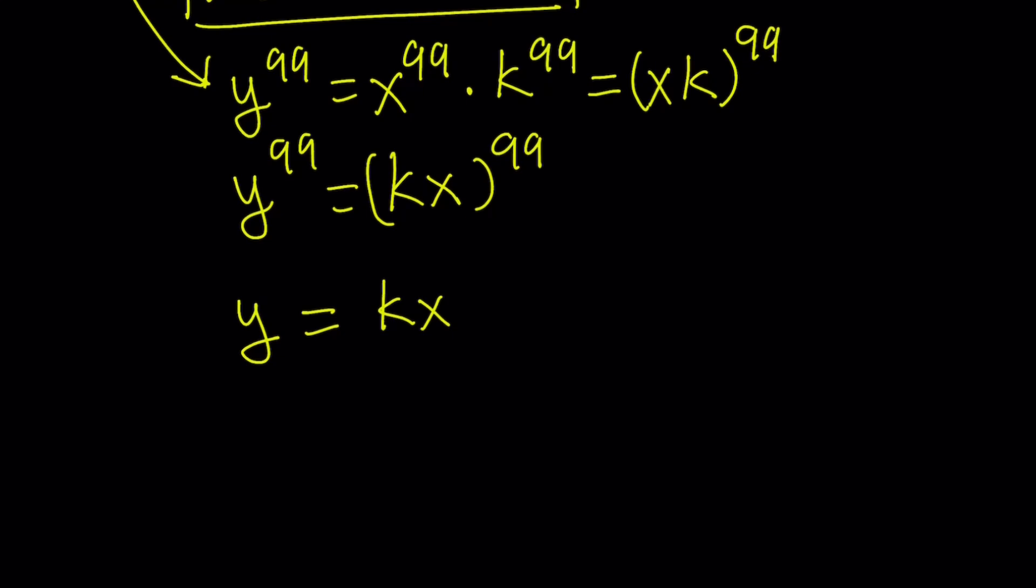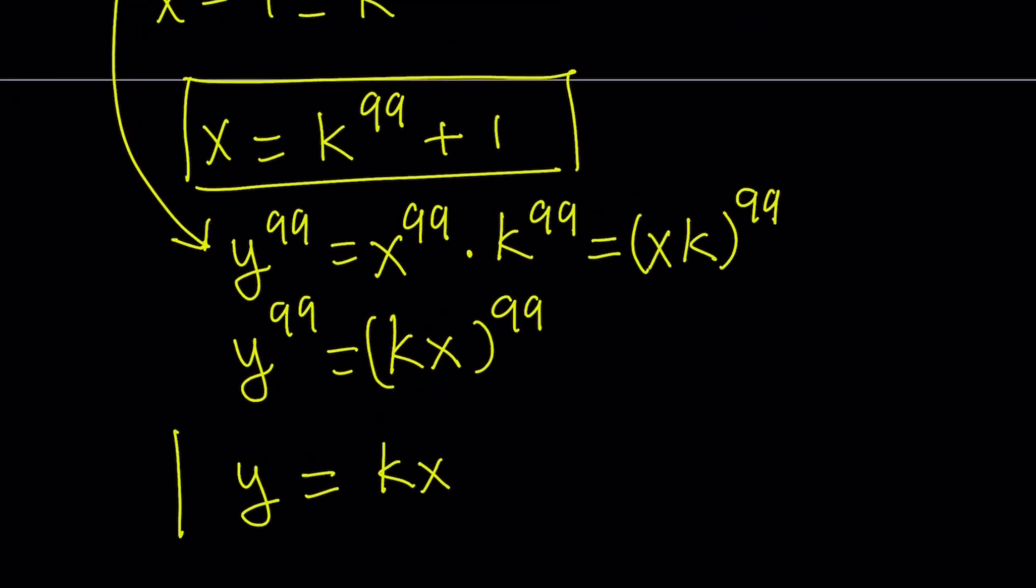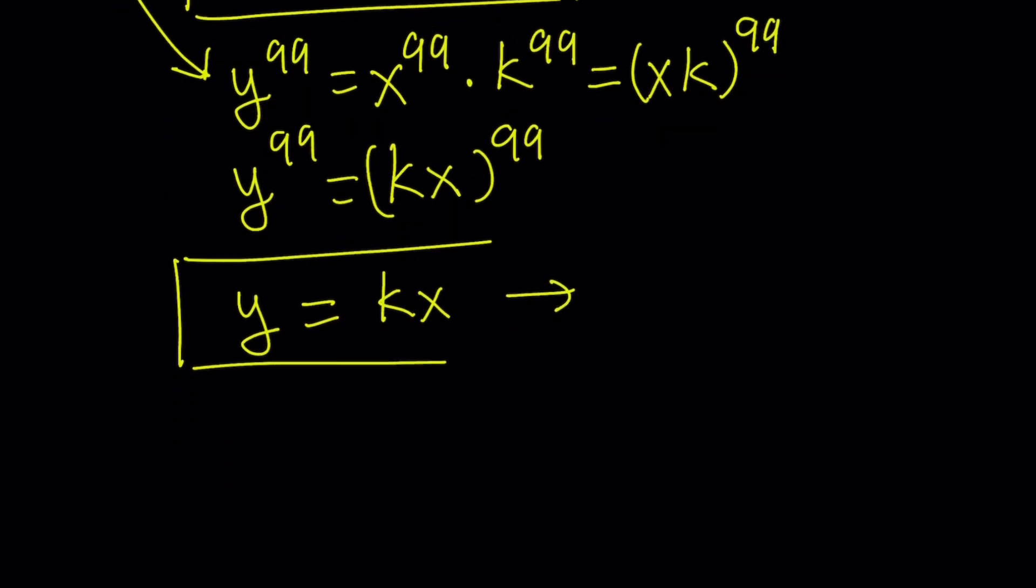This is good because we already have an expression for x, and now we can go ahead and use this to find an expression for y. All you have to do is take the x, multiply by k. So it's going to look like this. k times k to the power 99 plus 1, and finally, I can write the y as k to the power 100 plus k.